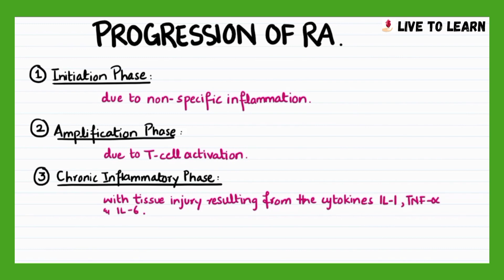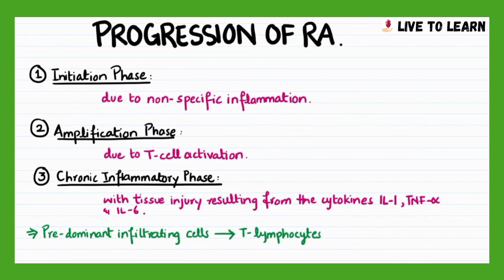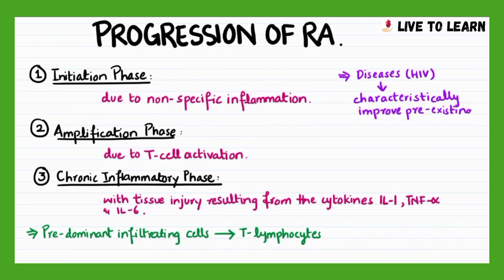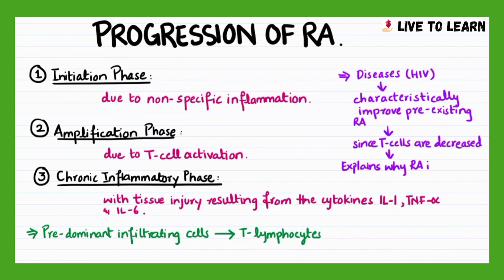The predominant infiltrating cells are the T-lymphocytes. Diseases such as HIV infection, where T-cells are decreased, characteristically improve pre-existing rheumatoid arthritis. This explains why rheumatoid arthritis is very rare in HIV-infected patients.